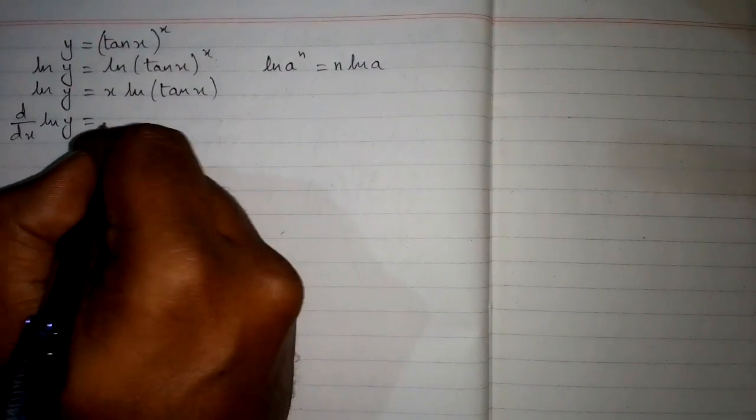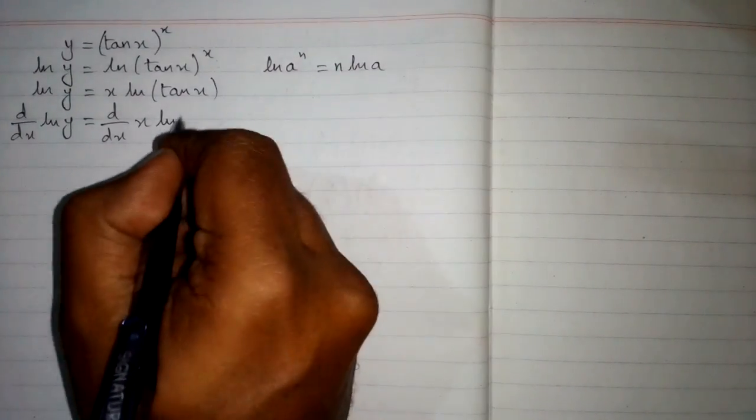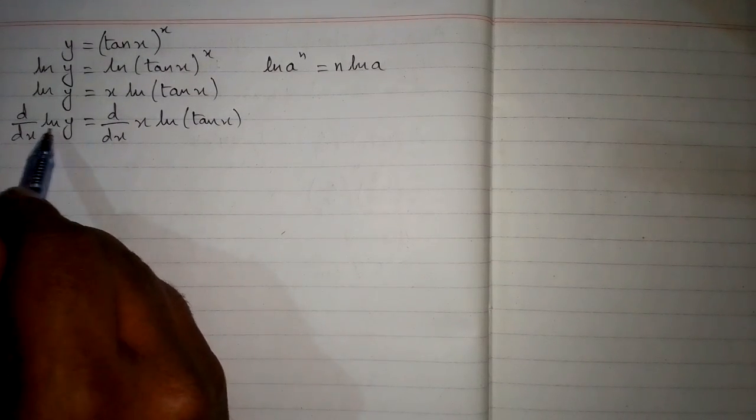Now we will differentiate both sides with respect to x. So we have d by dx of ln y is equal to d by dx of x times ln of 10x. Here we will apply the chain rule of differentiation because we cannot differentiate ln y directly with respect to x, so we write d by dy of ln y multiplied by dy by dx.